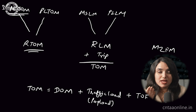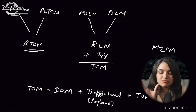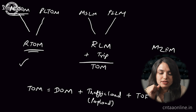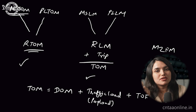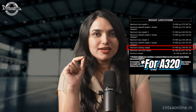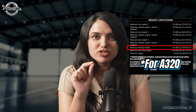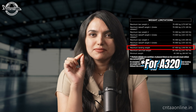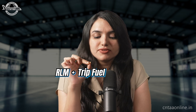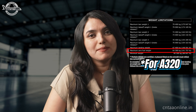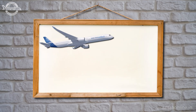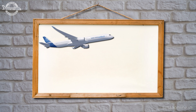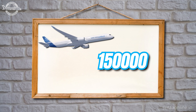So there are three factors for calculating the maximum takeoff mass for a given flight: one is the regulated takeoff mass (RTOM), the second is regulated landing mass plus trip fuel, and the third — which we will now discuss — is maximum zero fuel mass plus takeoff fuel.